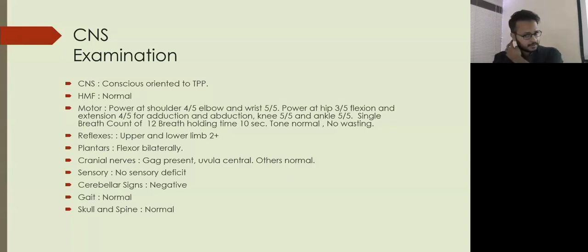Knee and ankle were 5 by 5. His single breath count was 12 and breath holding time was 10 seconds. Tone was normal and there was no wasting. Reflexes upper and lower limbs were normal. Plantars were flexor bilaterally. Cranial nerves - gag was intact, uvula was central. Other cranial nerve examination was normal. Sensory examination showed no deficits. Cerebellar signs were negative. He was not able to walk because of the power. Skull and spine were normal.